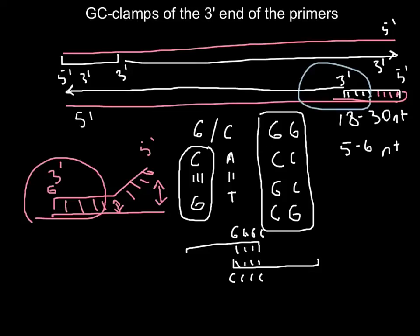What I also want to add is that when you design a primer, try to avoid such a situation when you have very low GC content for the whole sequence of the 18 to 30 nucleotides, or too high. Try to have it between 40 and 60 percent.